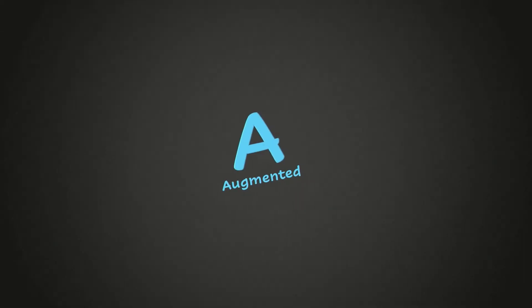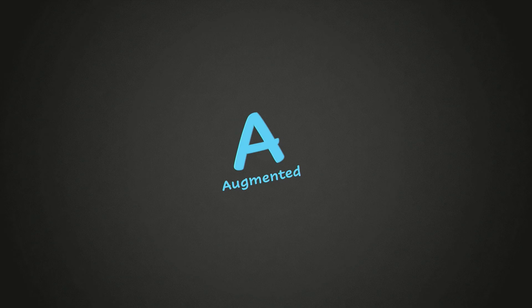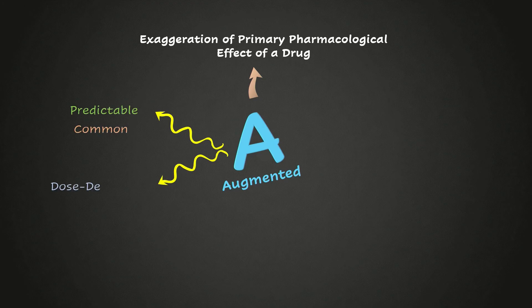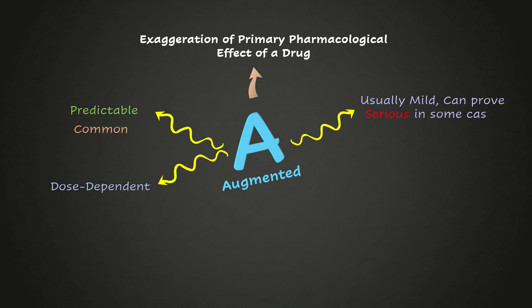For type A or augmented type reactions, as the name suggests, these involve exaggeration of the primary pharmacological effect of the drug when given in usual therapeutic dose. So they are predictable and very common. These effects are normally dose dependent and occur more commonly with drugs that have a low therapeutic index, like digoxin or warfarin. Though they are usually mild, they can prove serious in some cases, and they are related to a lower morbidity and mortality rate.